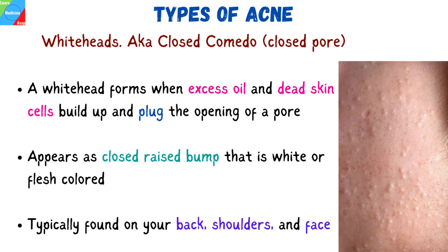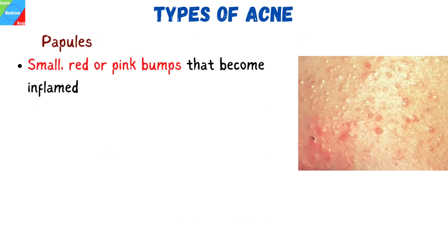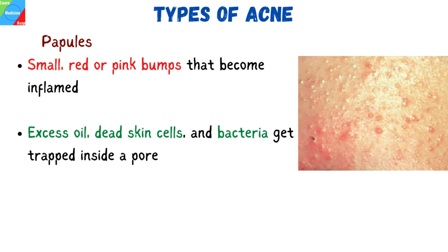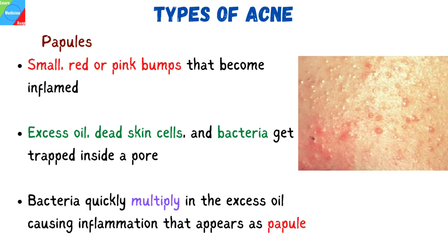Like blackheads, whiteheads are typically found on your back, shoulders, and face. Papules are small, red or pink bumps that become inflamed. When excess oil, dead skin cells, and bacteria get trapped inside a pore, the bacteria that are often present on our skin might quickly multiply in the excess oil. This causes inflammation that appears as a red or pink pimple known as a papule.